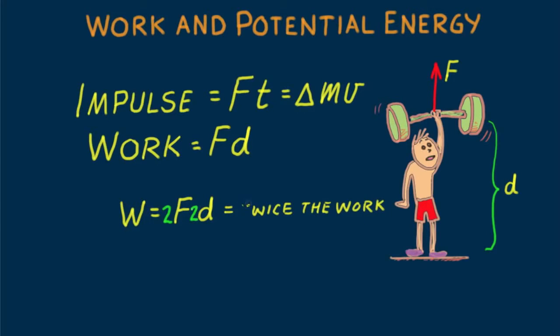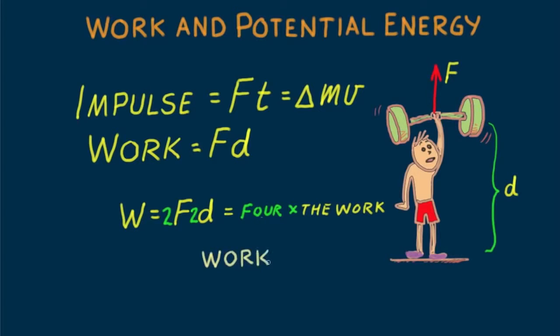Or if you lift twice the load twice the distance — that's two-twices — you do four times the work on the barbell. The work done becomes energy acquired by the barbell. More generally, the work done on anything changes the energy of that thing.